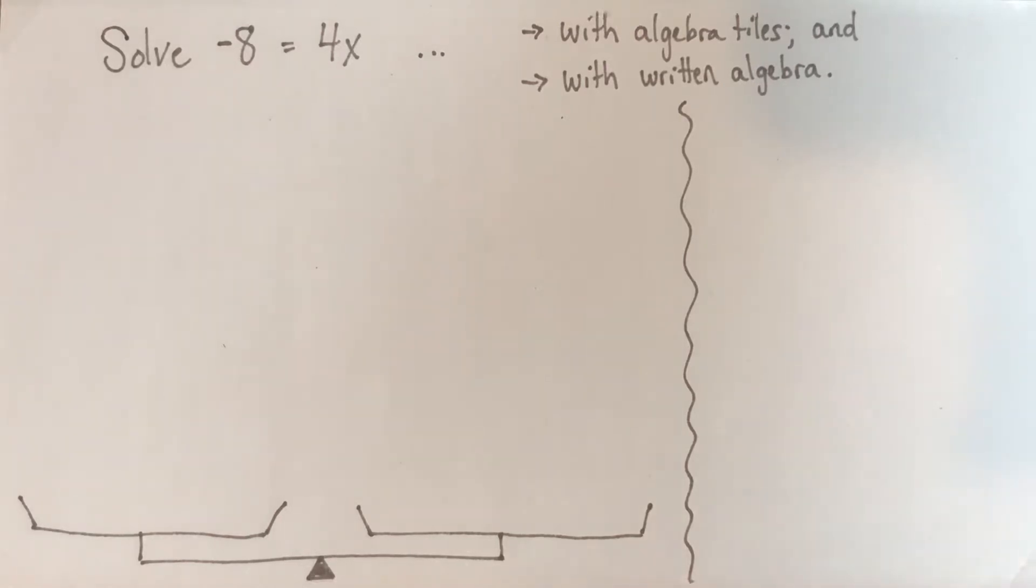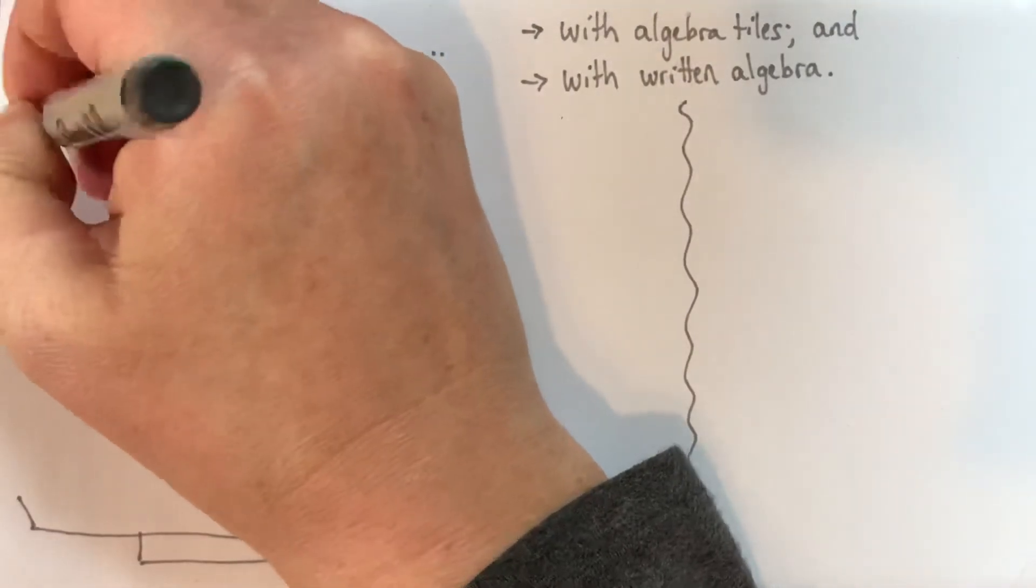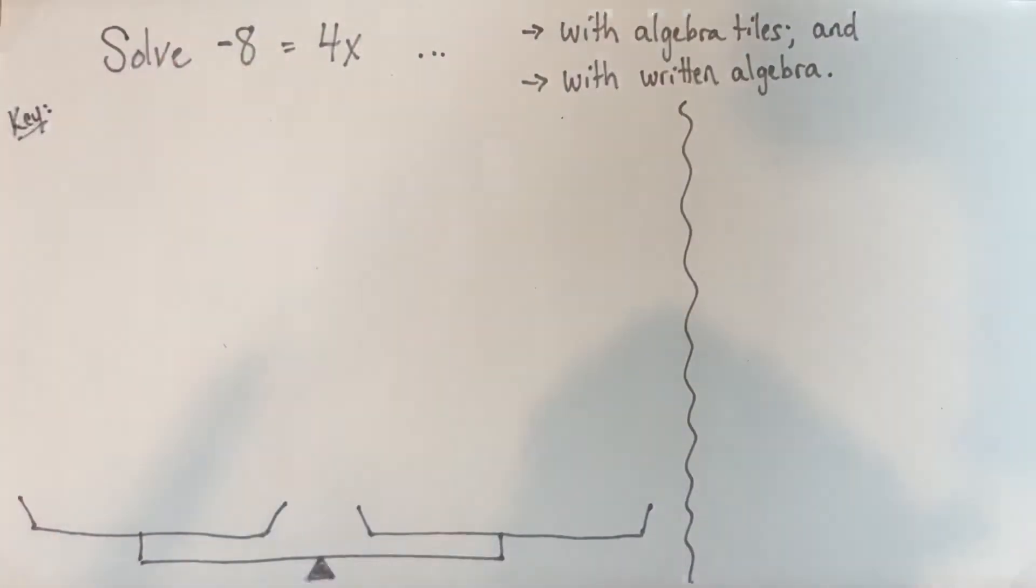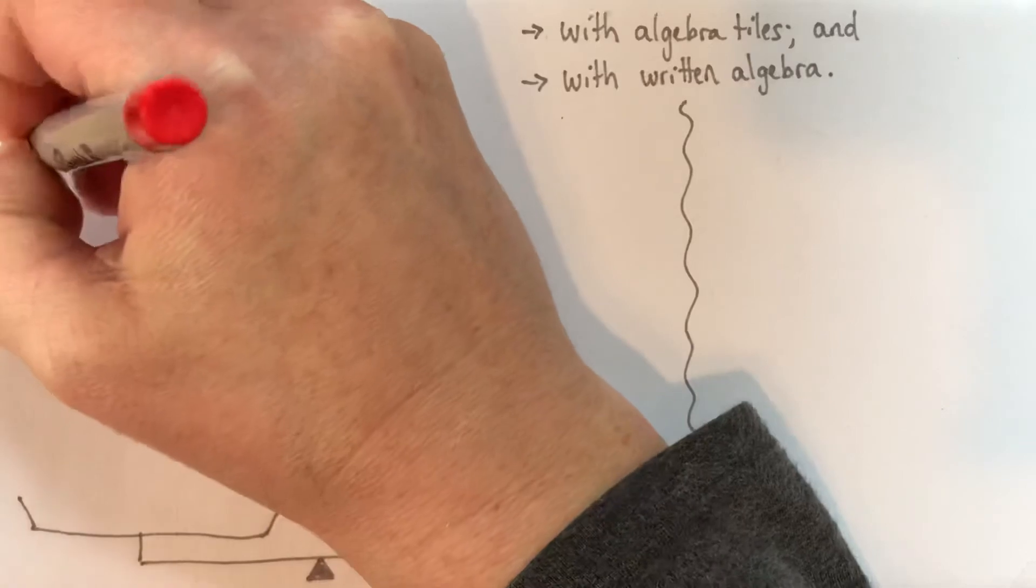Okay, so first of all, I should add my little key here. With my algebra tiles, I use the red to mean negative. And different people have different colored algebra tiles. It doesn't matter as long as you know what's negative and what's positive.